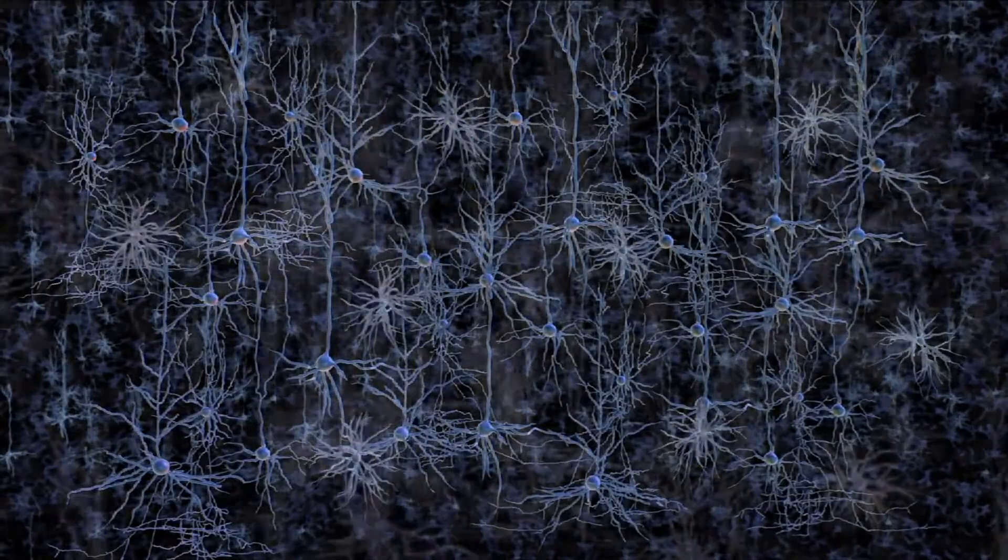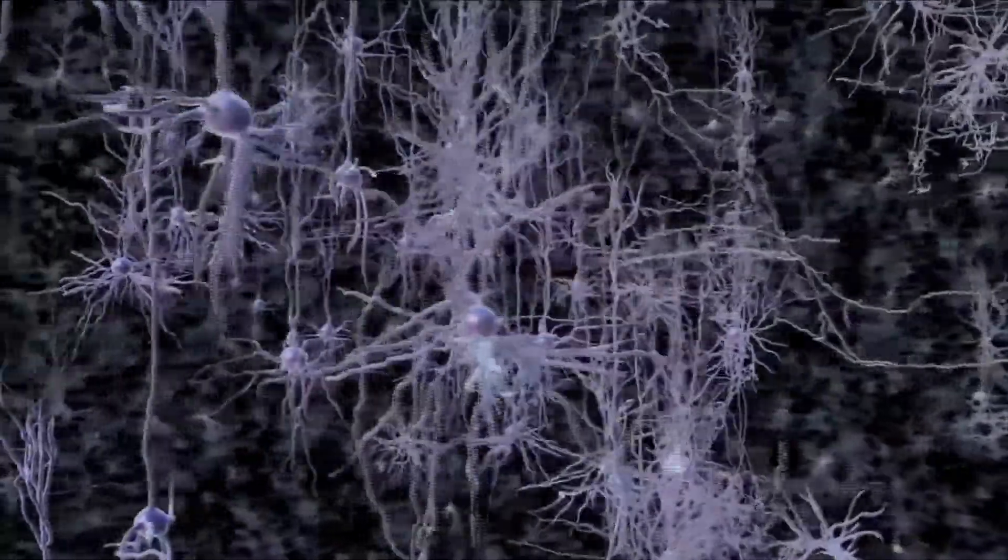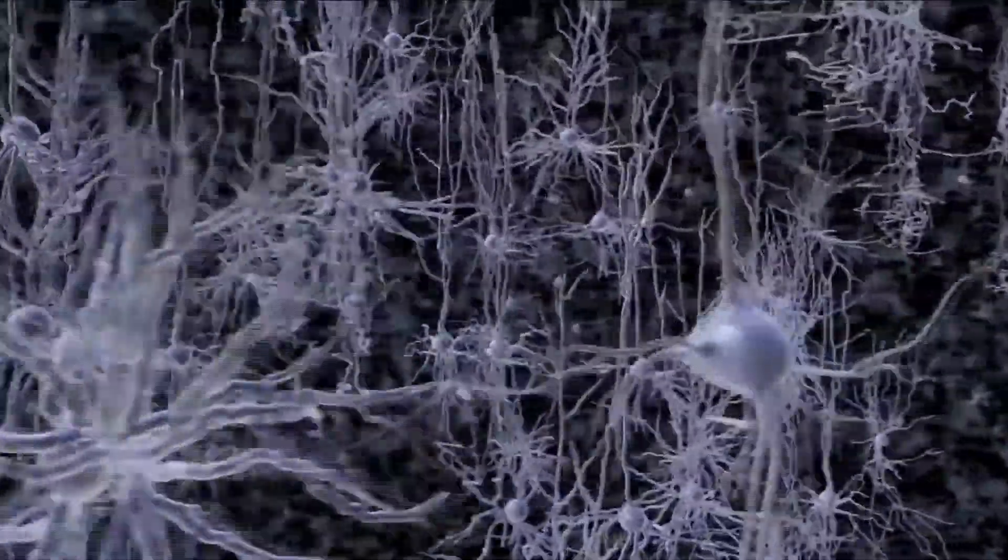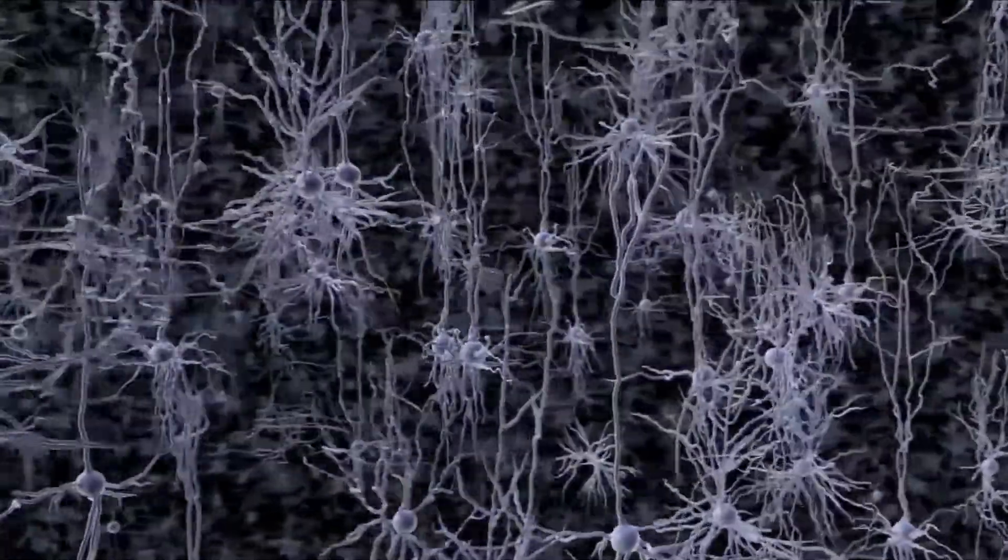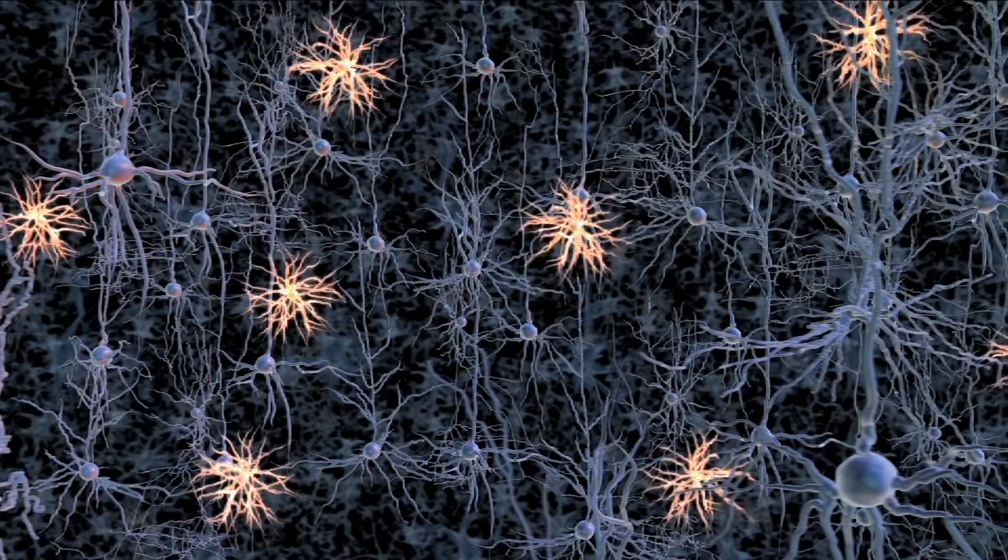Neurons come in thousands, perhaps tens of thousands, of different kinds, each with a unique shape, a distinct molecular composition, and a unique pattern of connections within the brain. For example, these cells, the basket cells,